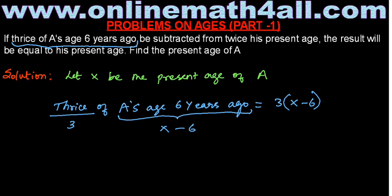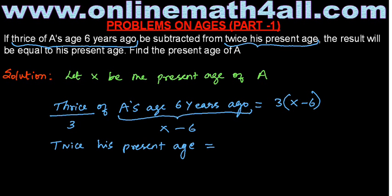Now I am going to get the second term: twice his present age. For the word twice, we write 2. His present age is X, because that is what we assumed. So the term twice his present age can be written as 2 times X.